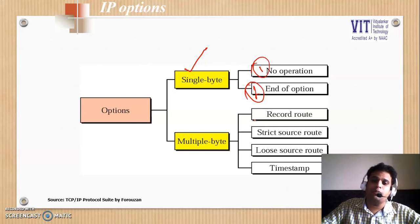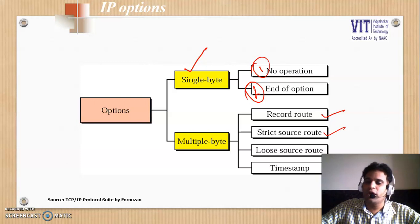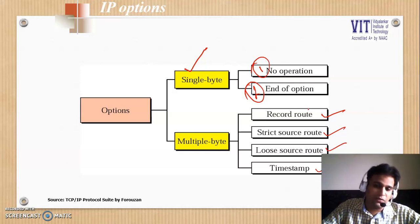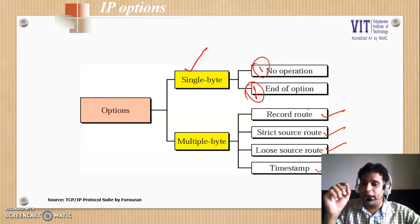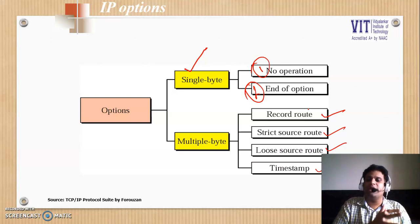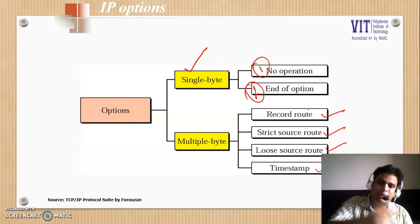In case of multi-byte options, there are four different options available: the first known as Record Route, the second known as Strict Source Route, the third known as Loose Source Route, and finally Timestamp. When talking about Record Route, if A is sending any packet to B, whatever routers the packet visits, their IP addresses would be recorded in the IP option.